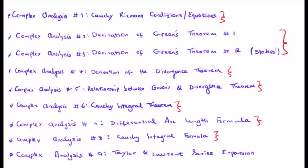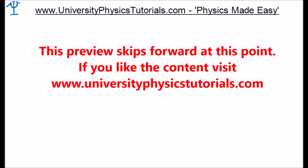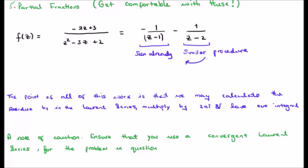The point of all this work is that we may calculate the residue B sub 1 in the Laurent series, multiply it by 2 pi i and then we have our integral.